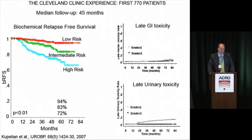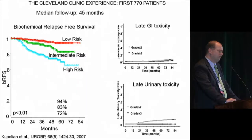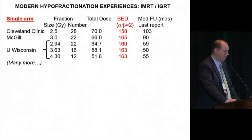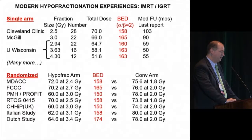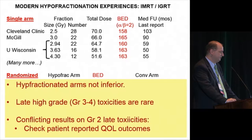The first modern dose-escalated experience came from Pat Kapelian at the Cleveland Clinic, testing 70 gray in 28 fractions of 2.5 gray using image guidance with the BAT ultrasound and early IMRT. Margins were quite small, with a posterior margin of only 4 millimeters. Results from 2007 showed better than 90% biochemical control out to about eight years for low-risk disease, with decrements for intermediate and high-risk disease, and GI toxicity was very modest.